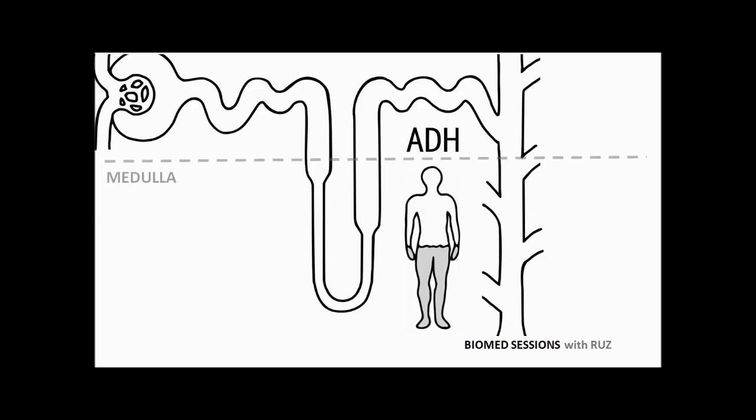For example, if you are dehydrated, ADH allows aquaporins, aka water channels, to be inserted into the epithelium, allowing water to be reabsorbed back into the blood. Remember, the medulla is salty, so if water is given the opportunity to leave, it will. On the other hand, if you are over-hydrated, a lack of ADH will mean that the collecting duct is more or less impermeable to water, so excess water can pass out into the urine.